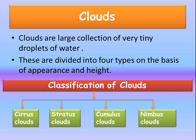Cumulus: C-U-M-U-L-U-S. Nimbus: N-I-M-B-U-S. What are the four types of clouds? Cirrus clouds, stratus clouds, cumulus clouds and nimbus clouds.